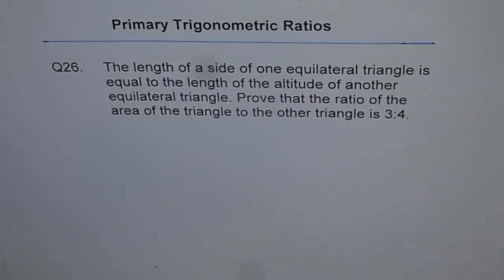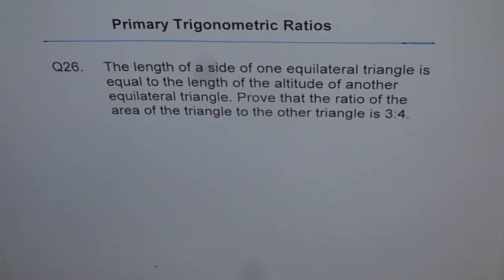Primary trigonometric ratios, question 26. The length of a side of one equilateral triangle is equal to the length of the altitude of another equilateral triangle. Prove that the ratio of the area of one triangle to the other triangle is 3 is to 4.